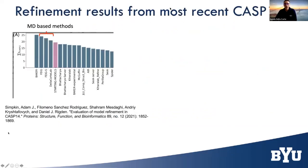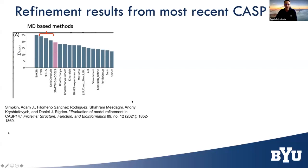Looking at the most recent CASP 14, here are the refinement results. Only four groups from all CASP participants were able to refine predicted protein structures beyond where they started. The pink bar represents the starting model — everything to the left improved. Three of these top methods are based on molecular dynamics, and I want to talk about those in more detail.